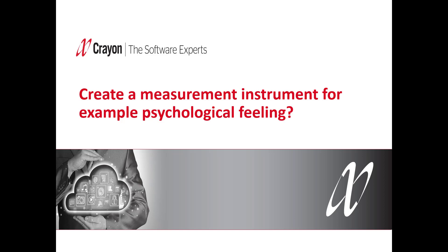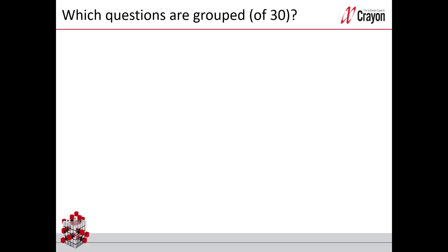Then we have the last case, which is about measuring something that is difficult to measure, like feelings, satisfaction, and so on. In my example, I would like to measure stress. So maybe you have 30 questions, and from these questions in a questionnaire, you will find out the groupings. Here are some examples of questions.